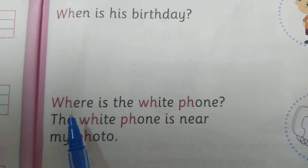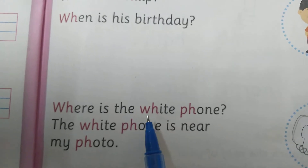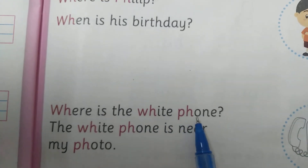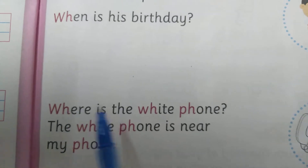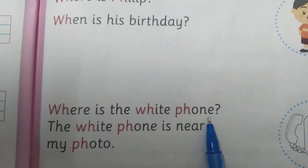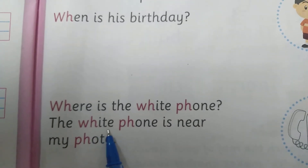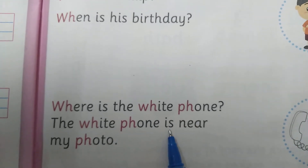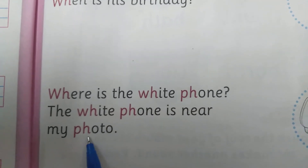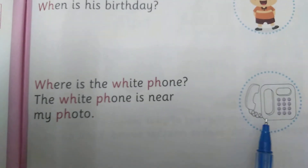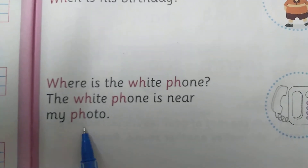Next one. W-H-E-R-E, where? I-S, is. T-H-E, the. W-H-I-T-E, white. P-H-O-N-E, phone. Question mark. Where is the white phone? N-E-A-R, near. M-Y, my. P-H-O-T-O, photo. So, where is the white phone? The white phone is near my photo.